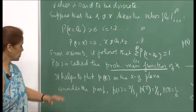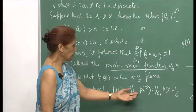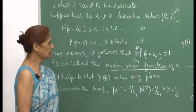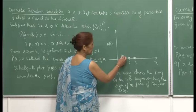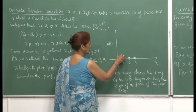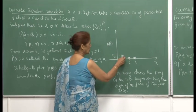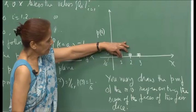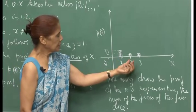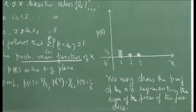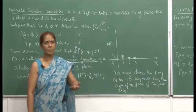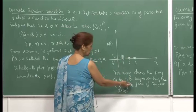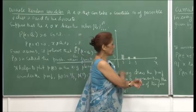It helps to plot the PMF on the x-y plane. Consider the probability mass function: P(1) = 2/3, P(2) = 1/6, and P(3) = 1/6. The random variable takes values 1, 2, 3 with these probabilities. You can draw a bar chart by erecting rectangles: the bar is centered at value 1 with height 2/3, and similarly for 2 and 3 with height 1/6. You can also try to draw the bar chart for the sum of 2 dice, which will take values from 2 to 12.